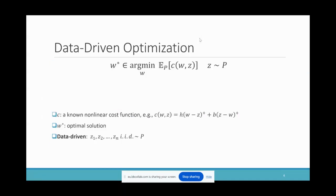We consider the general data-driven optimization of the following form: we have a known nonlinear cost function C — for instance, C has a specific form in the news vendor problem. Our goal is to minimize the expectation of C. This function C depends on a decision W as well as a random object Z. The distribution of Z is unknown; instead, we only have access to data Z_i that are i.i.d. drawn from the ground truth distribution P. We let W-star denote the target optimal decision.